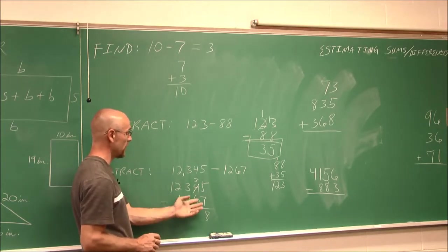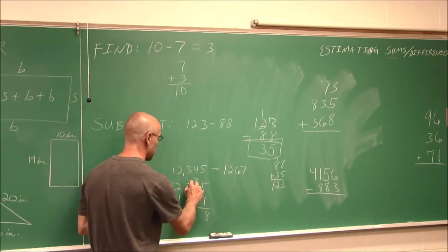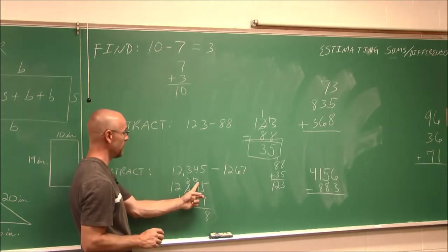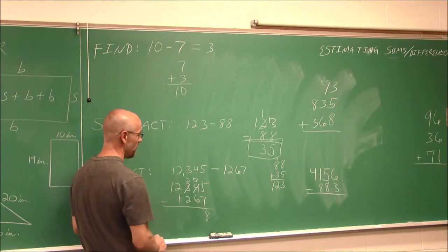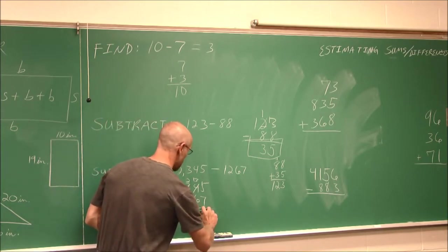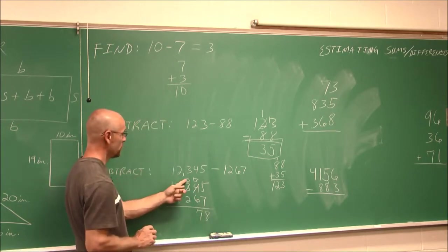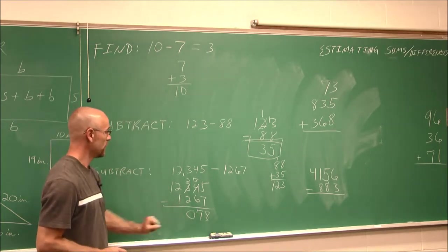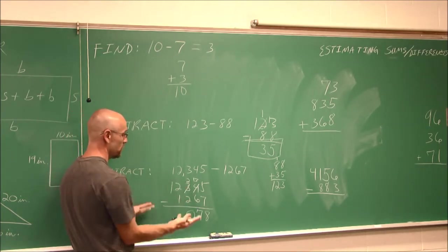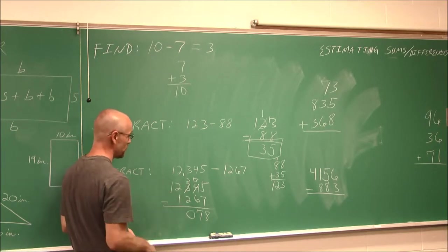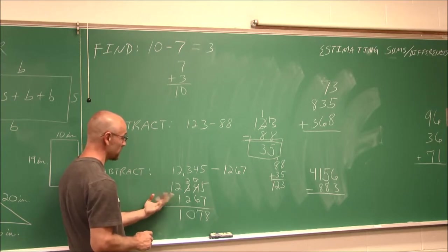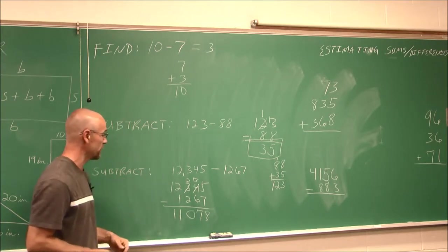3 minus 6, well, I can't take 6 from 3, so again, I have to borrow. So I make this a 2 and bring 10 over here. So 13 minus 6 is going to give me 7. 2 minus 2 is 0. I didn't have to borrow, but I got 0 because the difference of 2 and 2 is nothing. There's no difference. 2 minus 1 is 1, and 1 minus nothing, there's nothing here. I just basically carry it down.